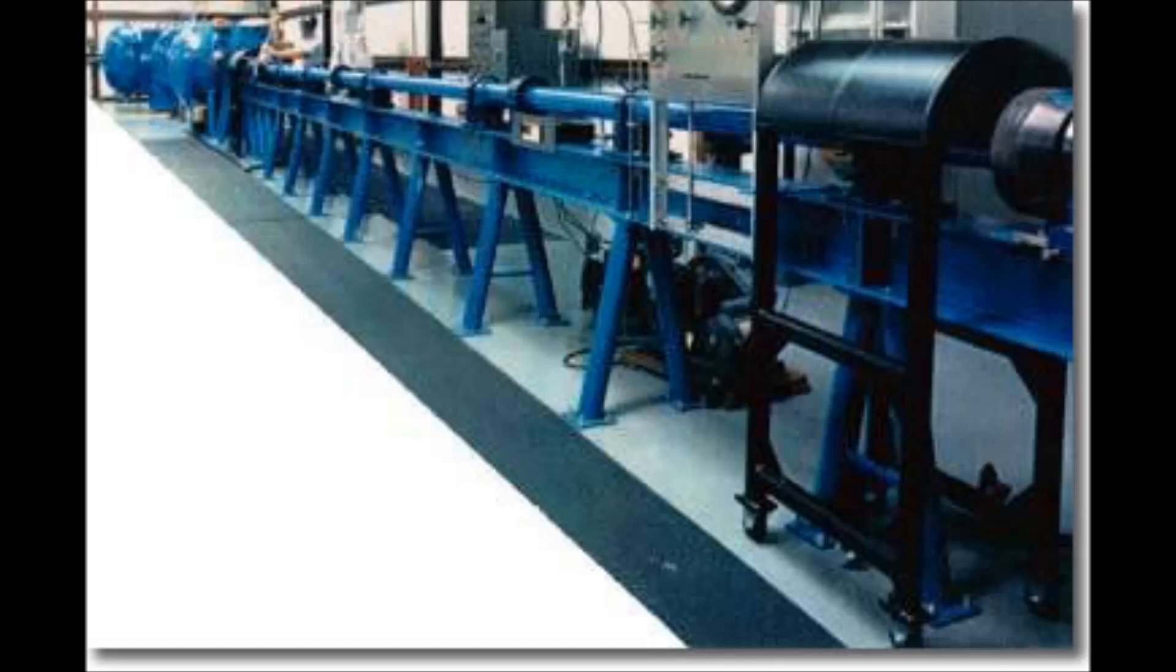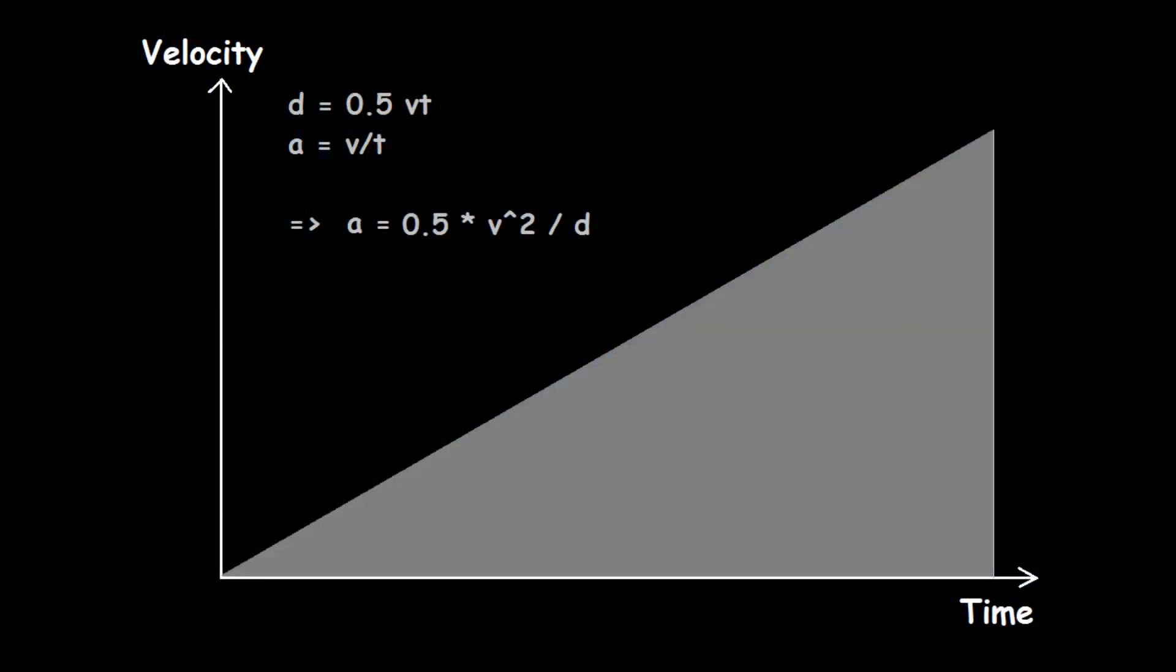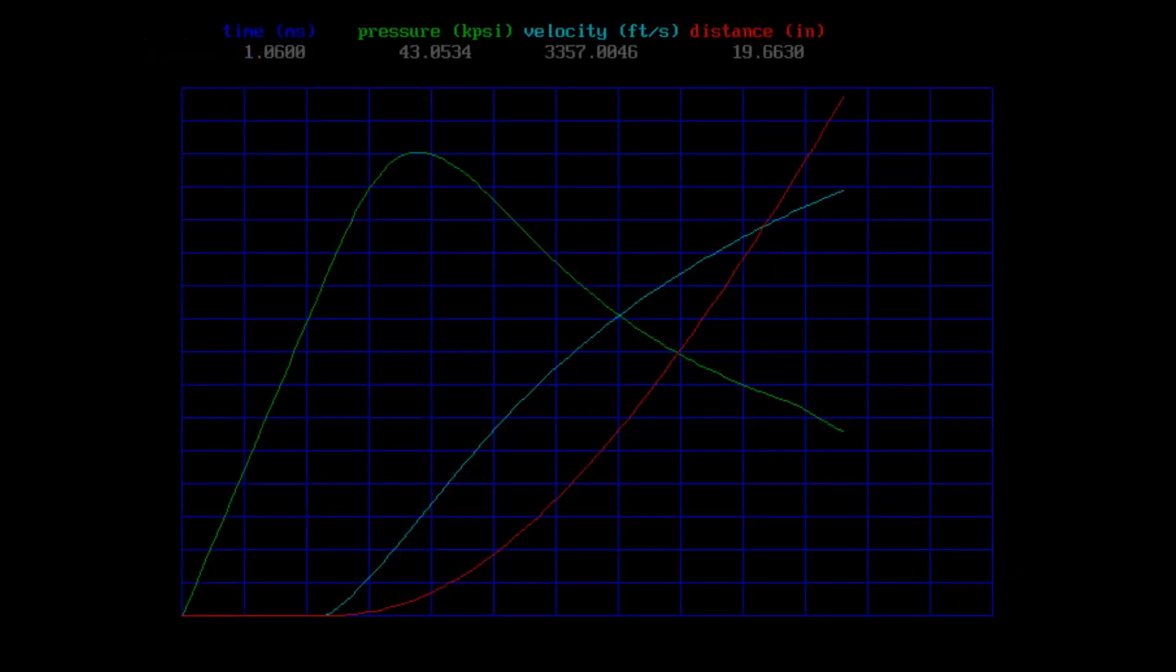Now, at this point, I want to take a moment to reconsider those acceleration calculations I came up with earlier. I had assumed constant acceleration along the barrel. And this is an approximation which is way wide of the mark. You see, as the propellant pushes the projectile down the barrel, it expands. And in so doing, its pressure drops. And therefore, so does the acceleration.